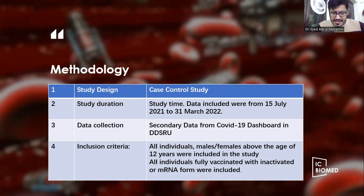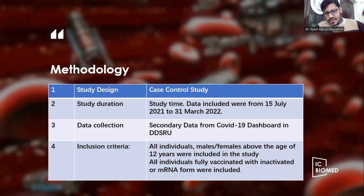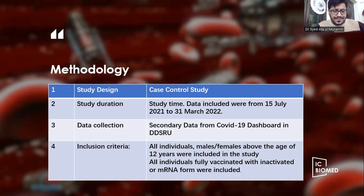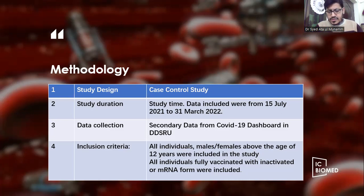The data was mainly secondary data collected from the COVID-19 dashboard with proper authorization from the District Disease Surveillance and Response Unit of Faisalabad. We also utilized data from an immunization management system to confirm the vaccination status of patients. We included all individuals — male and female — with age more than 12 years who were fully vaccinated with inactivated or mRNA type vaccines.